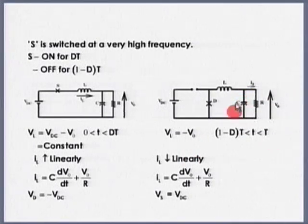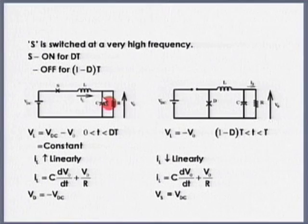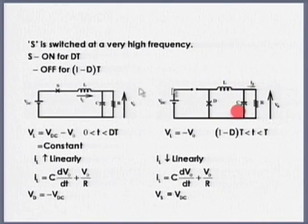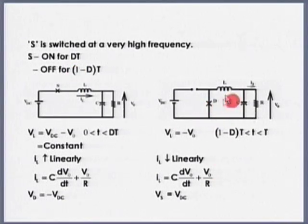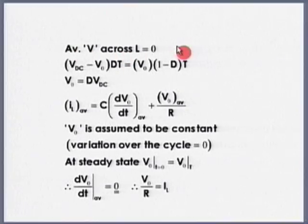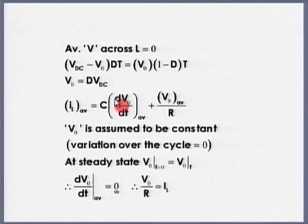So: (V_DC − V_out) × D × T = V_out × (1 − D) × T. This is the voltage condition, and if I simplify, I will get V_out = D × V_DC — very popular. For the current equation, at steady state the average value of current through the capacitor should be zero; otherwise capacitor voltage will change. So I_L_avg = V_out_avg / R.